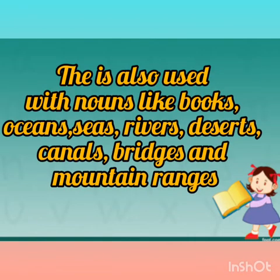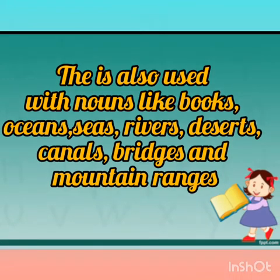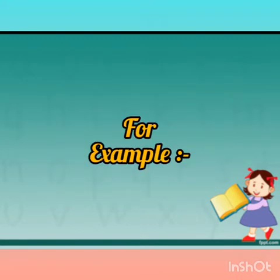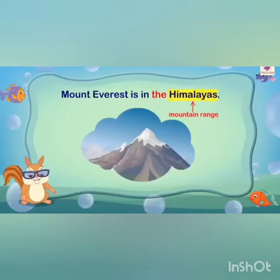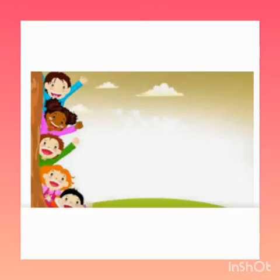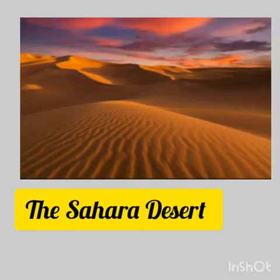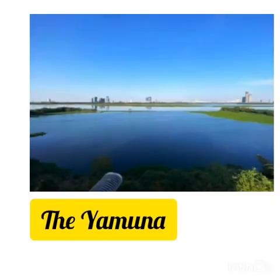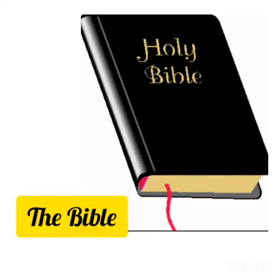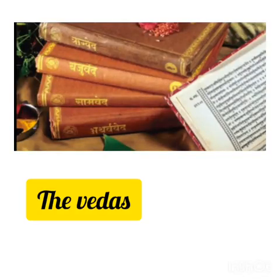'The' is also used with nouns like books, oceans, seas, rivers, deserts, canals, bridges and mountain ranges. For example, 'Mount Everest is in the Himalayas.' More examples: the Indian Ocean, the Sahara Desert, the Yamuna, the Bible, and the Vedas.